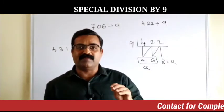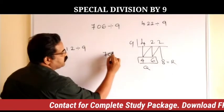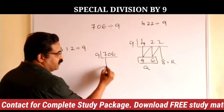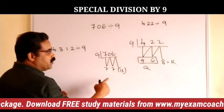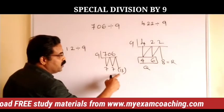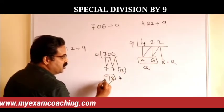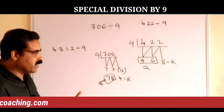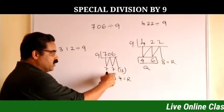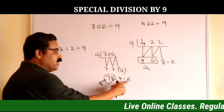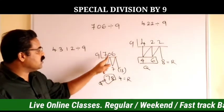Let us divide 706 by 9. Take 7 here, then 7 plus 0 is 7, then 7 plus 6 is 13. Since 13 is more than 9, we carry the 1: add 1 to 77 to get 78 as the quotient, and 1 plus 3 gives 4 as the remainder. So 78 is the quotient and 4 is the remainder when 706 is divided by 9.